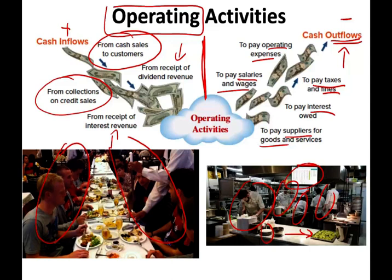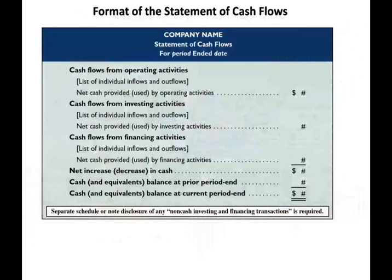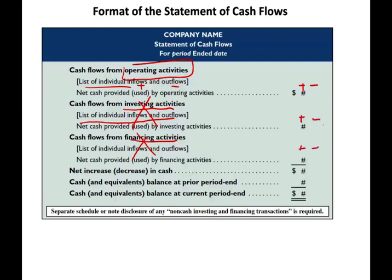Receipts of dividend revenue — if you have investments in stocks and they pay dividends, that's an operating activity. Receipts of interest revenue — if you have money in the bank and receive interest, that's also operating. You want to have more cash inflow than outflow, so let's take a look at a skeleton of the statement of cash flows.